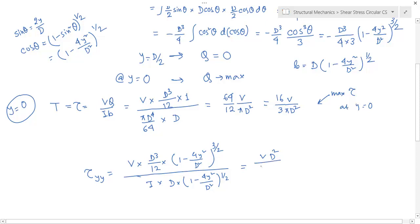VD² divided by I times 12 times (1 - 4y²/D²). This is the equation of tau at a distance of y.